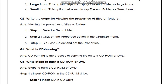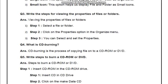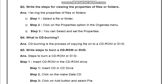Add the steps for viewing the properties of a file and folder. File and folder properties ko hum kaise dekh sakte hain? Step 1: Select the file or folder — sabse pehle file folder ko select karo jiske properties dekhni hain. Step 2: Click the Properties option in the Organize menu — Organize menu me Properties option par click karo.